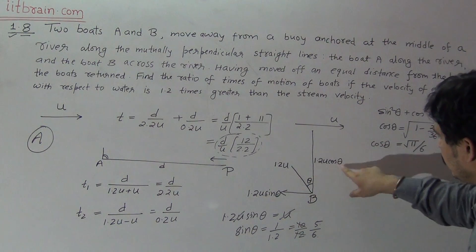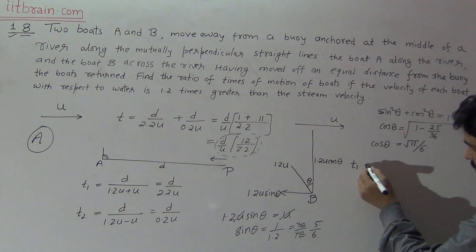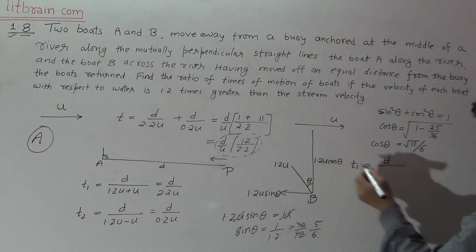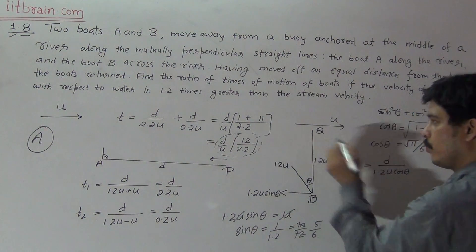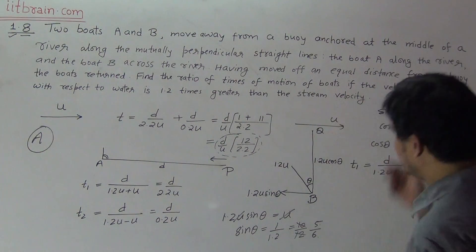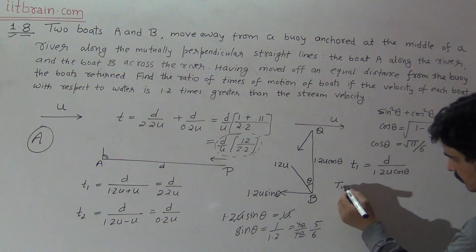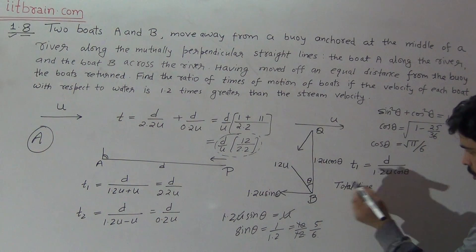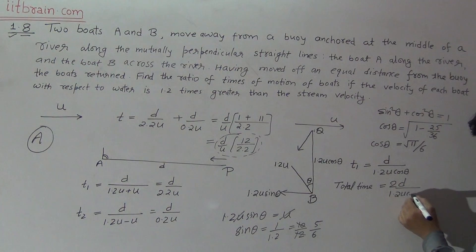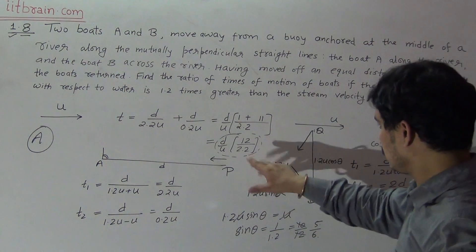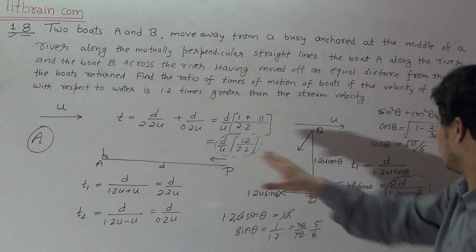The velocity due to which boat B crosses the river is 1.2U·cos θ. So the time taken to cross distance D from B to Q is T1 = D / (1.2U·cos θ). Since the same time is taken on the return journey, the total time for boat B is 2D / (1.2U·cos θ).